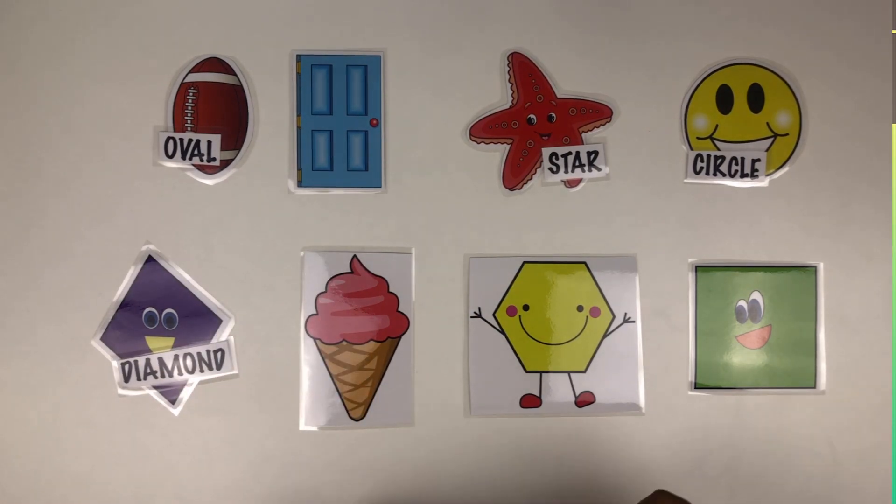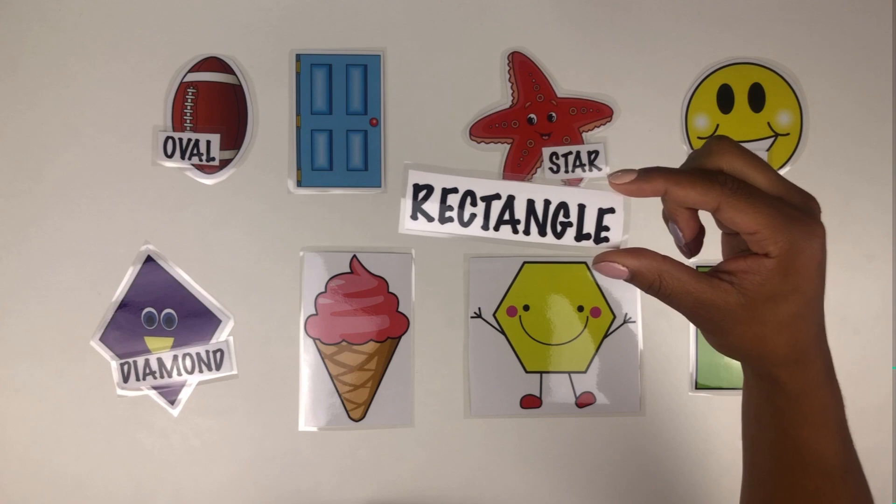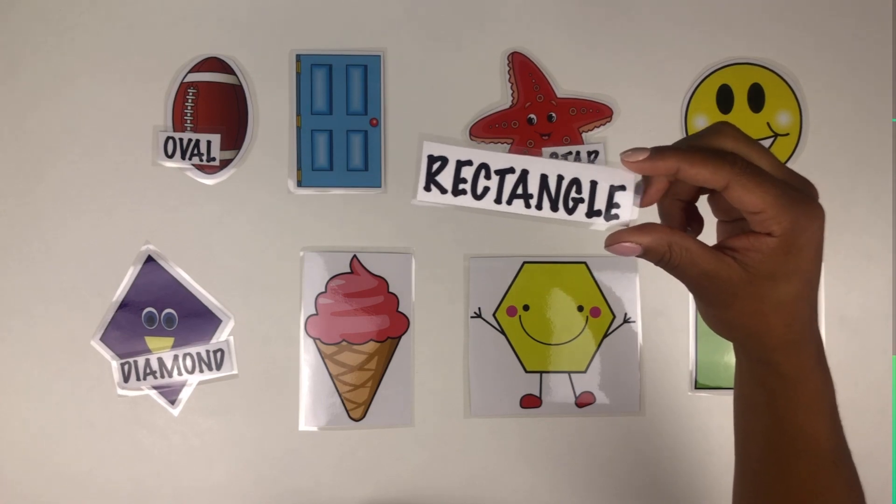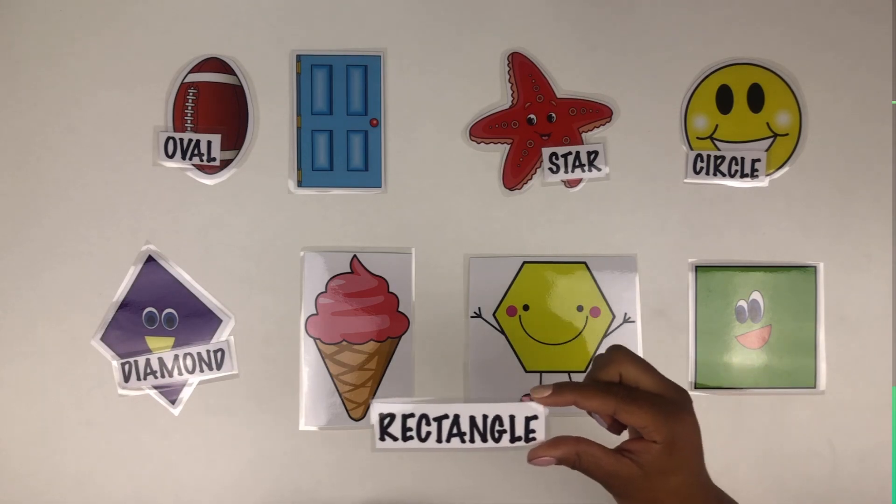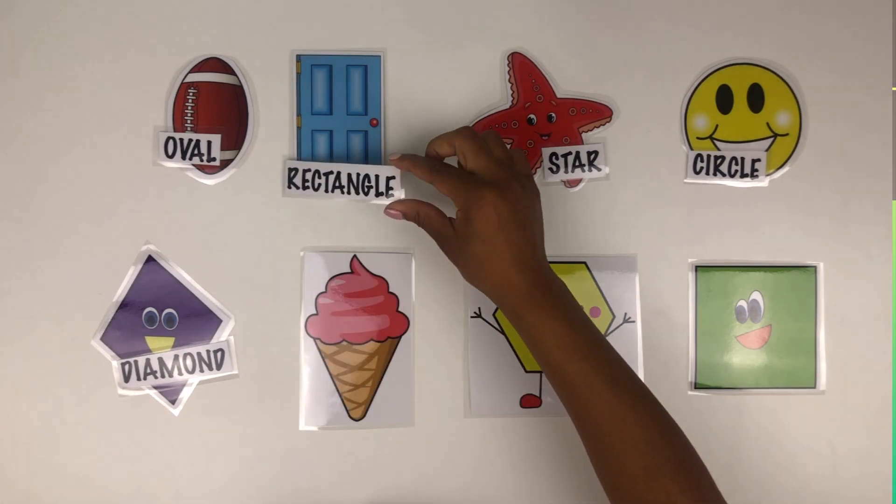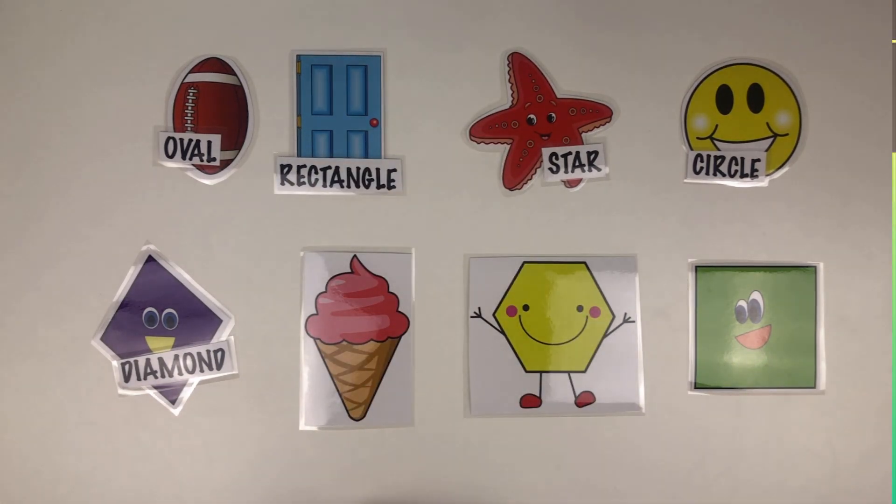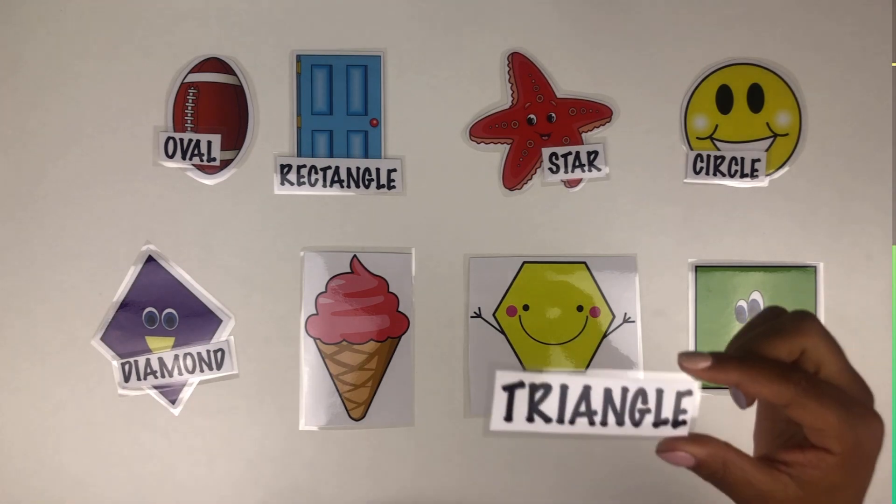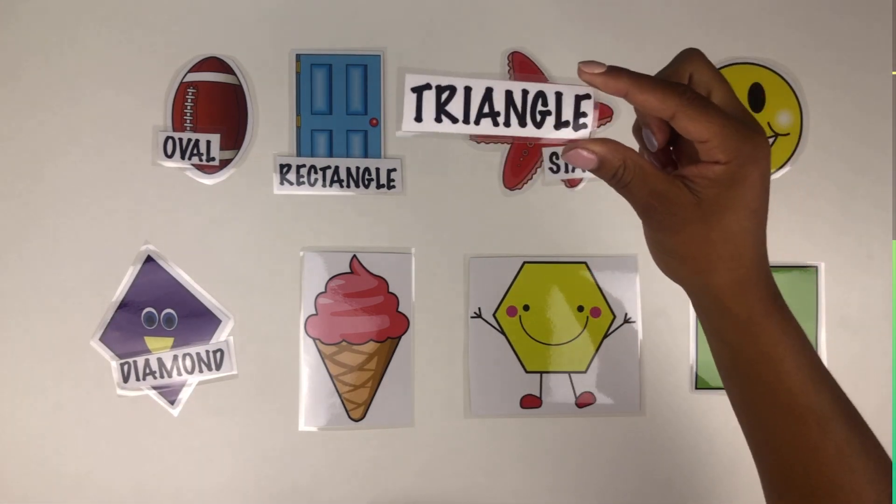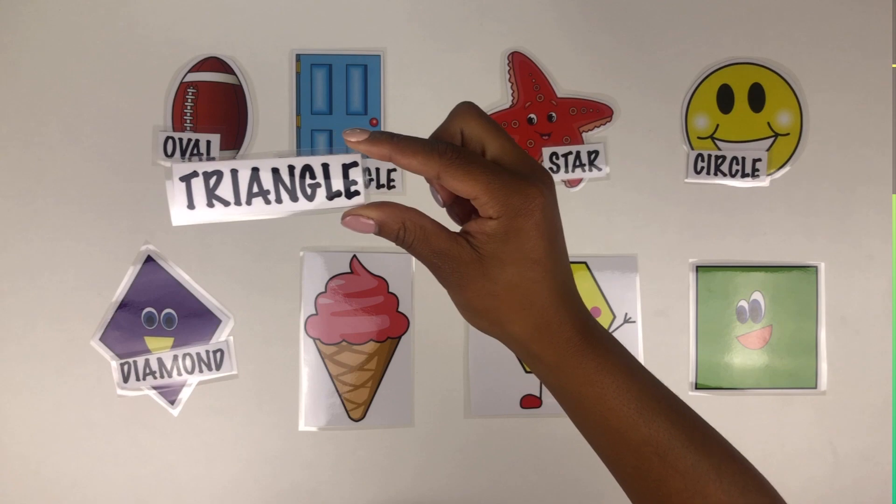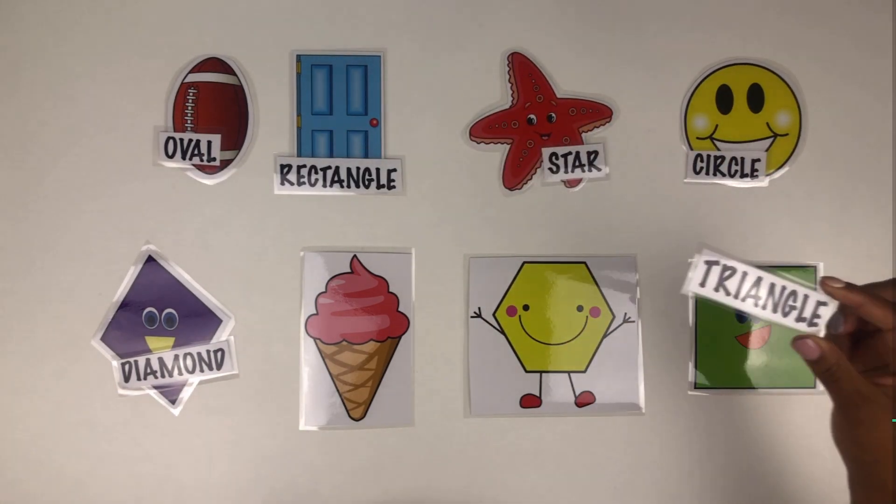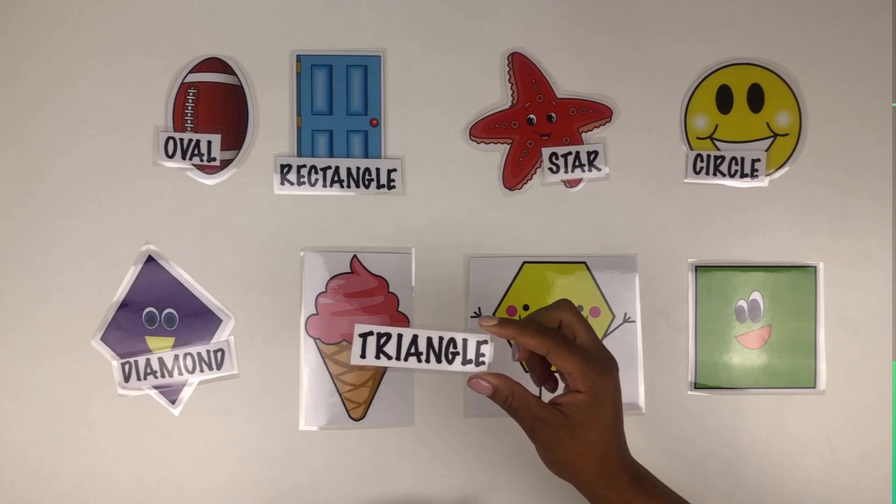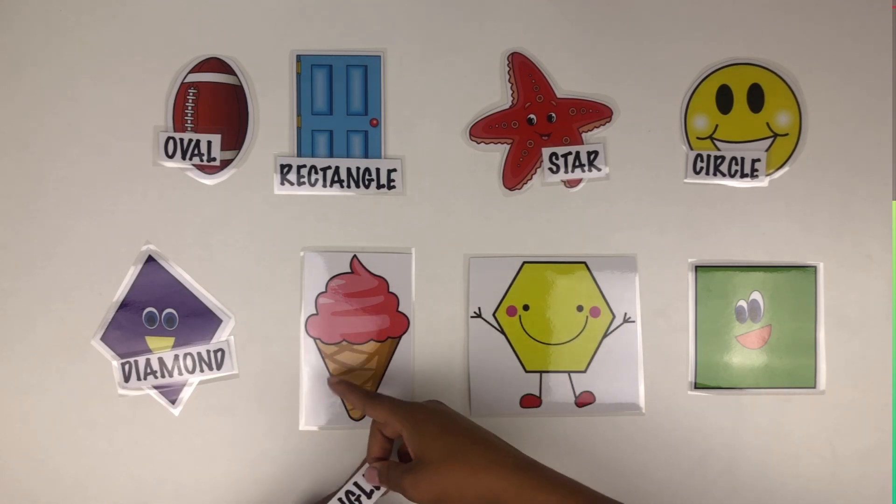How about a rectangle? A rectangle, which shape is a rectangle? The door, very good. How about a triangle? This one's a bit tricky. A triangle, which shape is a triangle? The ice cream cone, the bottom part of the ice cream, the cone is a triangle, very good.